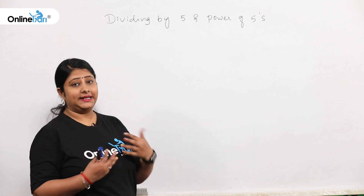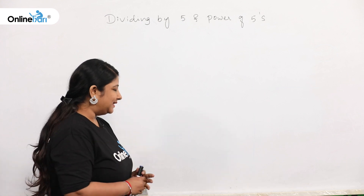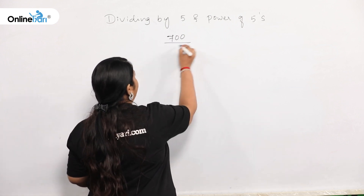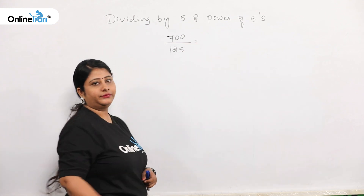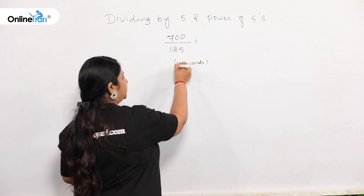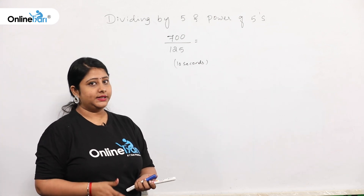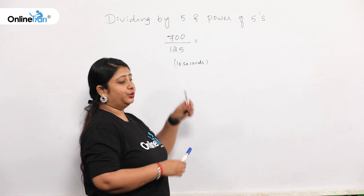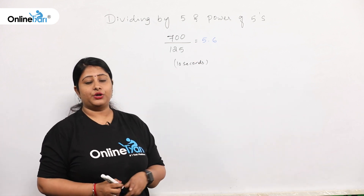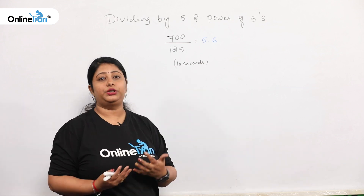The technique name is dividing any number by 5 or with the powers of 5. Let me give you one simple example before I start this. So 700 divided by 125 — I want you to answer this question in less than 10 seconds. Is it possible using our traditional method? No, it is not possible. The answer for this is 5.6, and how I got 5.6 is what I am going to discuss.